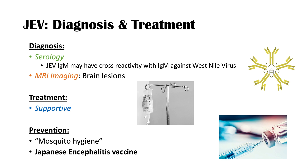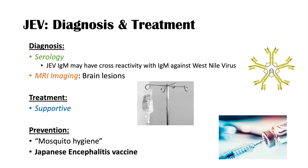To recap: diagnosis of JEV is through serology looking for JEV IgM, and MRI imaging can reveal characteristic brain lesions. Treatment is supportive — managing symptoms and maintaining hydration. Prevention is the most important priority, achieved through mosquito hygiene and the Japanese encephalitis vaccine, which helps prevent JEV infection and the neurological sequelae that may follow.